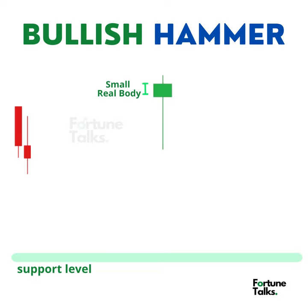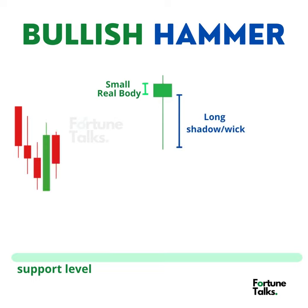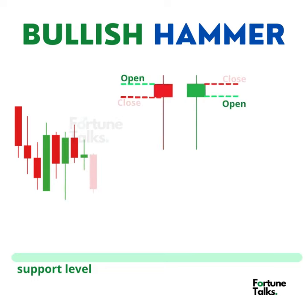The hammer pattern has a small real body and a long lower shadow. The lower shadow is at least twice the size of the real body. The close price can be above or below the opening price, which means the real body can be either green or red.